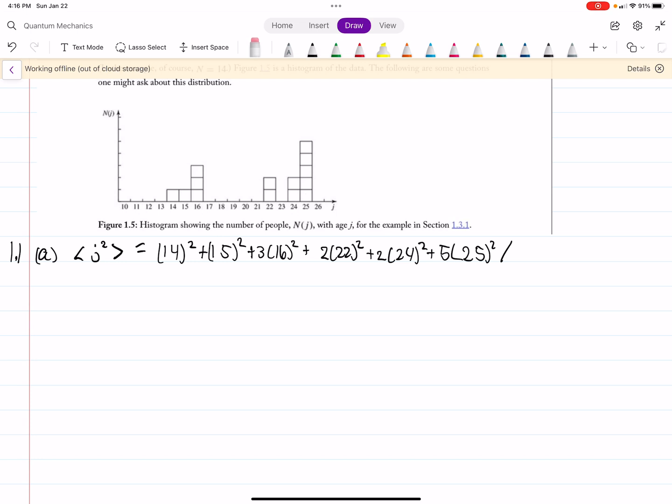And then we divide by the total number of data points that we have. So let's see, we had 5 here, 6, 7, 8, 9, 10, 11, 12, 13, 14. So we divide by 14. And if you do that, I get 3,217 divided by 7.